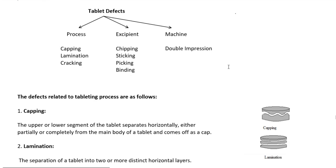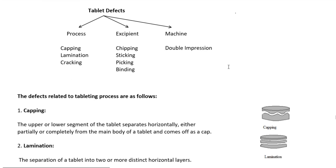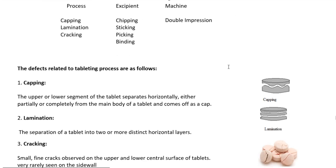Capping is when the upper and lower segment of the tablet separates horizontally, either partially or completely, from the main body of the tablet and comes off as a cap. This defect is capping.